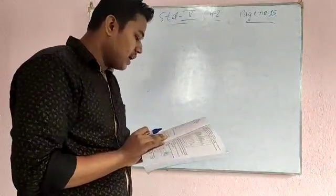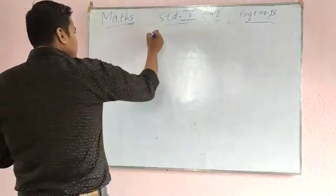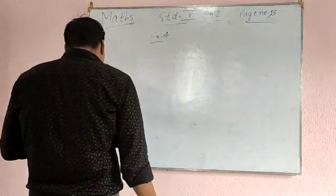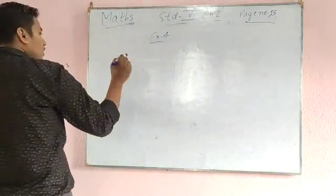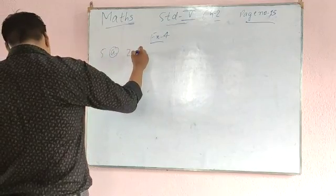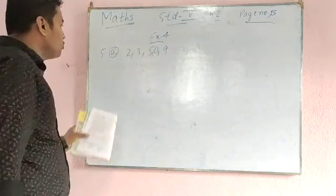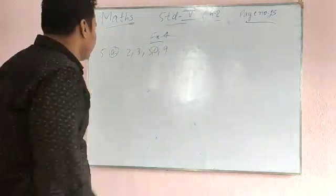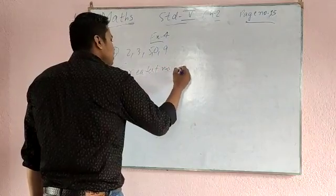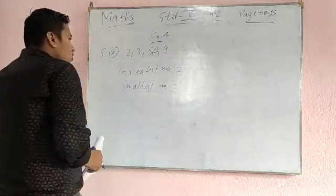Now question number 5 is: write the smallest and greatest number using each of the following digits only once. The digits are 1, 2, 3, 5, 0, 9. Using these numbers you have to write the greatest number and the smallest number. So please, one thing you need to know: